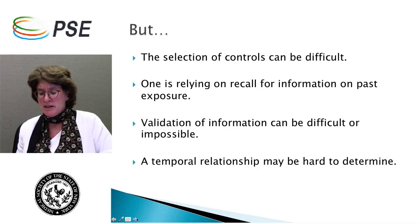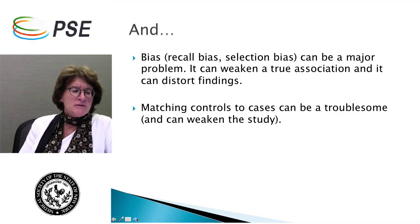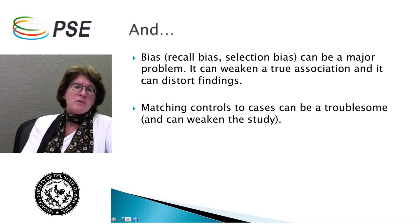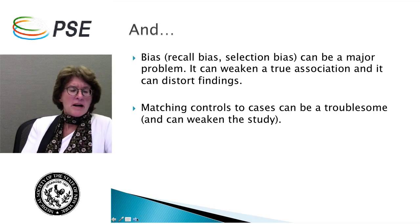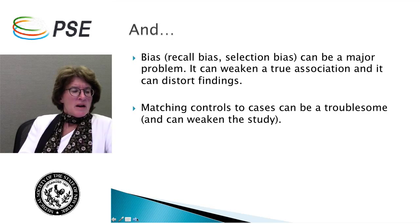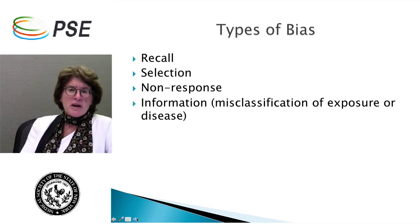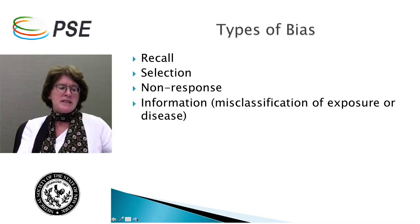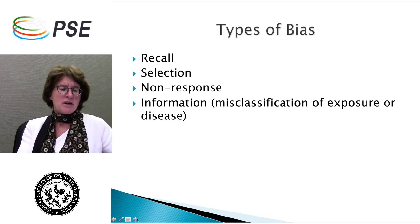Bias is a big factor in any study, but certainly in a case-control study. There's selection bias — maybe the cases are not representative of those with the disease. There's recall bias, which can distort findings. We've also talked about matching. In addition to recall and selection bias, there's non-response bias — they're not giving you answers to the questions. Information may be misclassified. All of this can make the case-control study findings less strong compared to other types of studies.